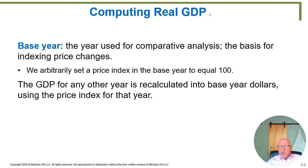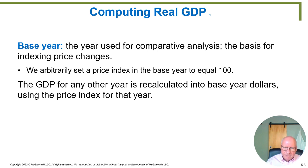So let's figure out how we're going to do that. We do it by computing something called the base year. The base year is the year used for comparative analysis — it's the basis for indexing price changes. It's arbitrary; you just have to pick a year and declare that this is the year we're going to use to calculate our prices. It's a purely arbitrary thing — someone's got to pick it, and it changes every decade or so.